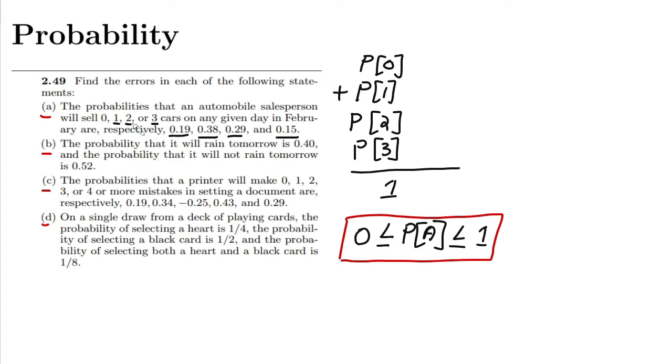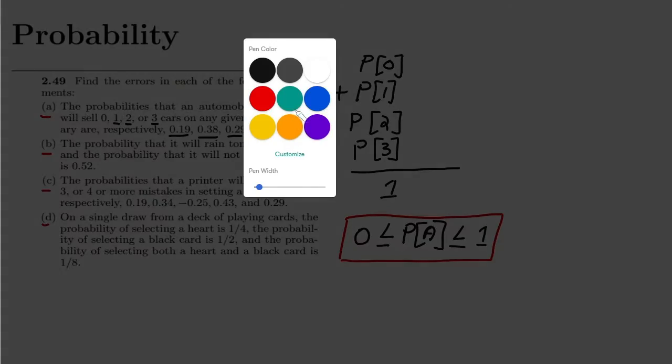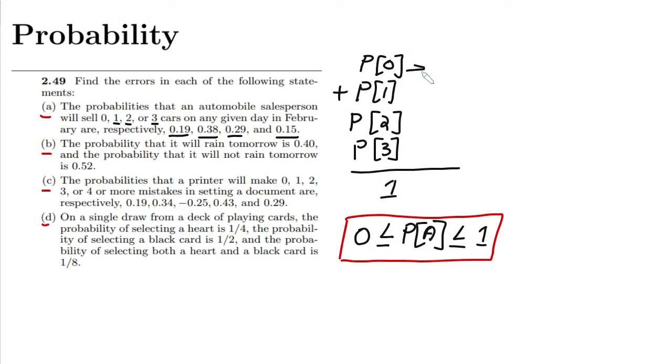Let me start writing all the probabilities here in order to see what the different probabilities are. The first probability is 0.19, the second one is 0.38, the third one is 0.29, and that one is 0.15. Let me add them.